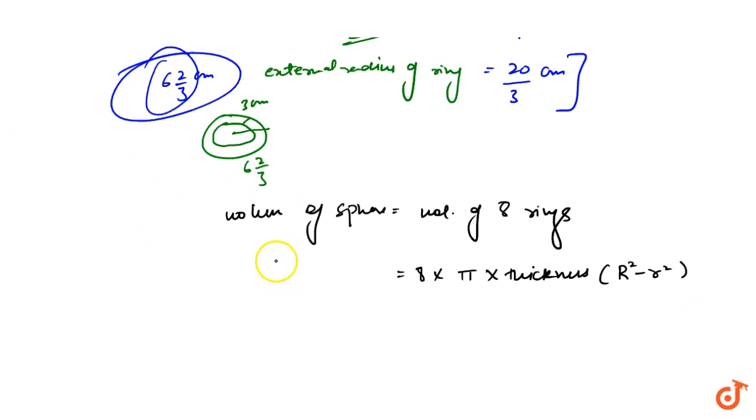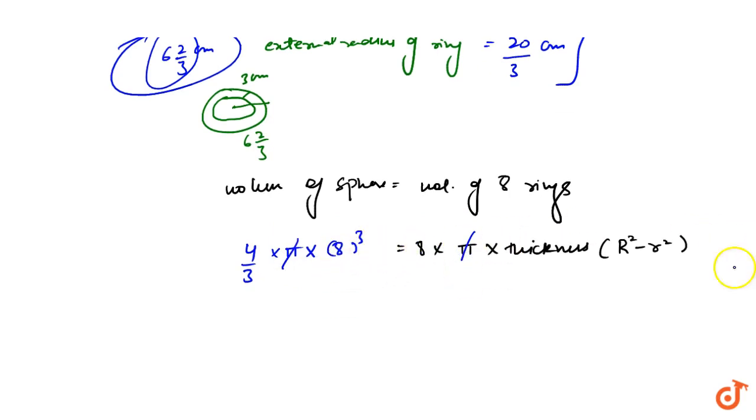Volume of sphere is 4 upon 3 pi r cube. Radius is 8 cm, so 8 cube. Pi cancels here, and 1 to 8 square cancels. We put the external radius, which is 20 upon 3 cm. Thickness is given as 3.